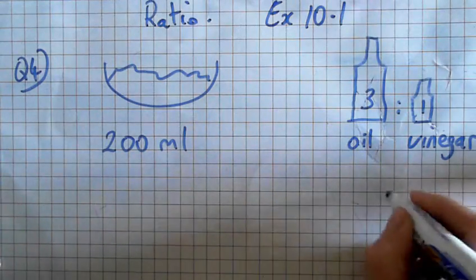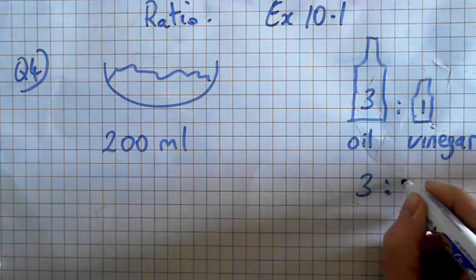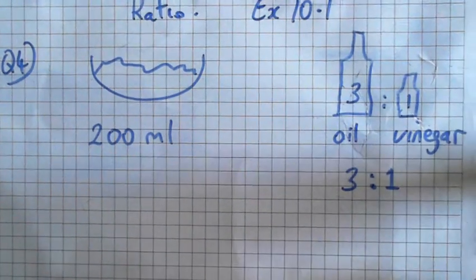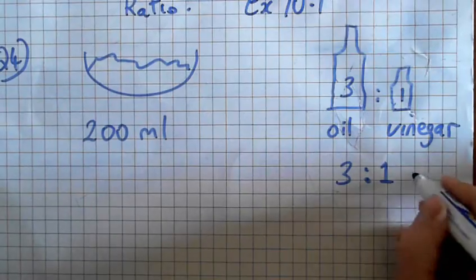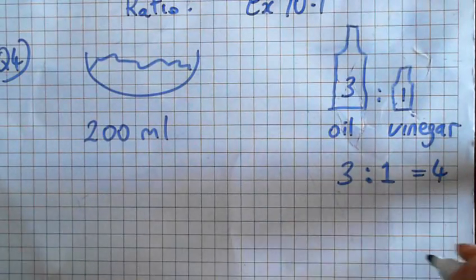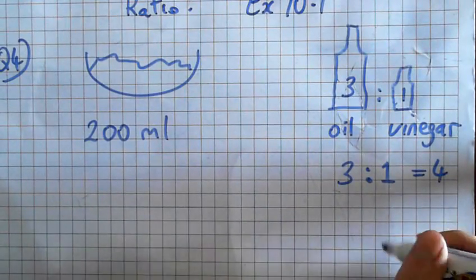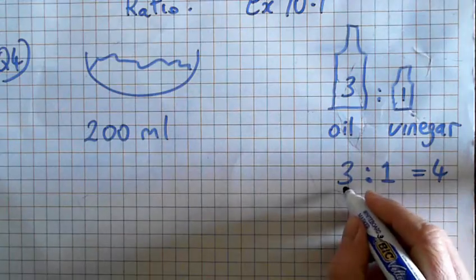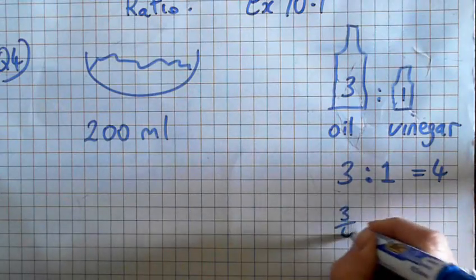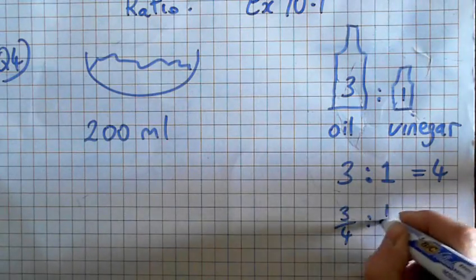So the ratio is 3 to 1. What do you do first of all? Add the 3 and the 1, and you get 4. Now we make fractions out of it, so that's the ratio. What's the first fraction? 3 over 4 and 1 quarter.